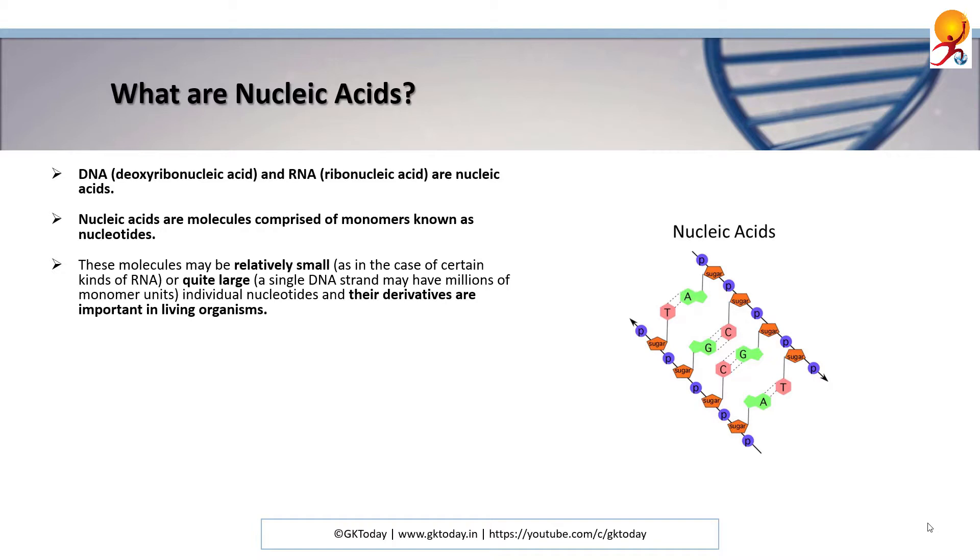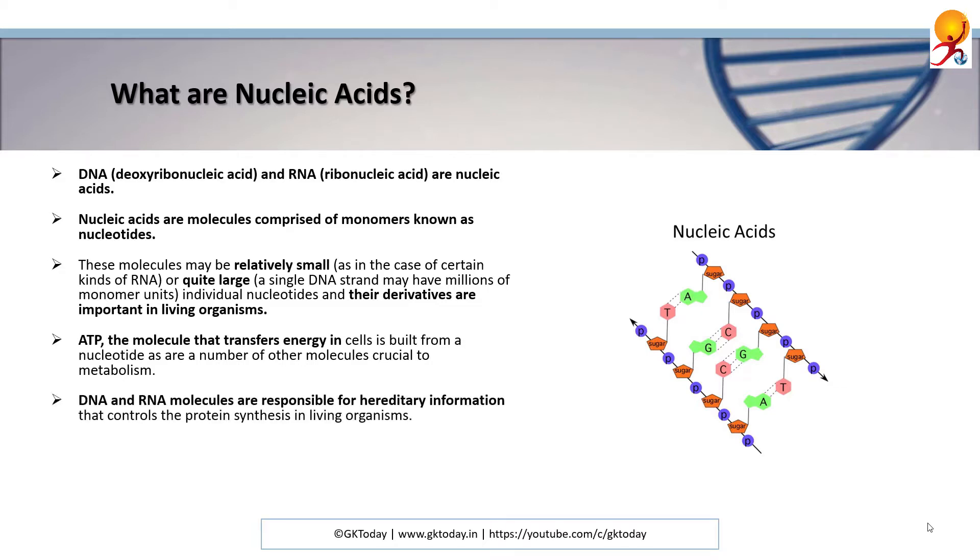Individual nucleotides and their derivatives are important for living organisms. ATP, the molecule that transfers energy in cells, is built from nucleotides, as are a number of other molecules crucial to metabolism. DNA and RNA molecules are responsible for hereditary information that controls the protein synthesis in living organisms. They are called nucleic acids because they were first discovered within the nucleus of a cell by a Swiss biochemist, Fredrik Miescher.